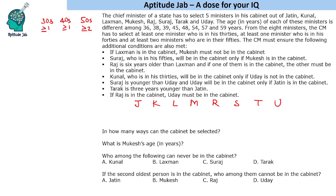Suraj is in his 50s and is younger than Uday. So if Suraj is 54, Uday will be 57 or 59; and if Suraj is 57, Uday will be 59 — giving us 2 possibilities. Then, Raj is 6 years older than Lakshman, so one possibility is 45 and 39.